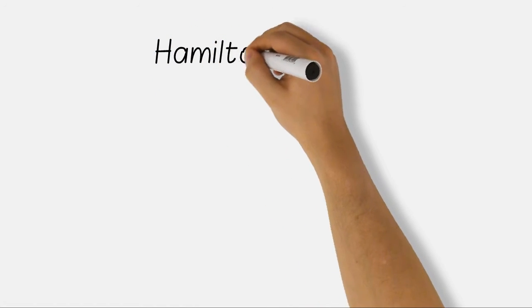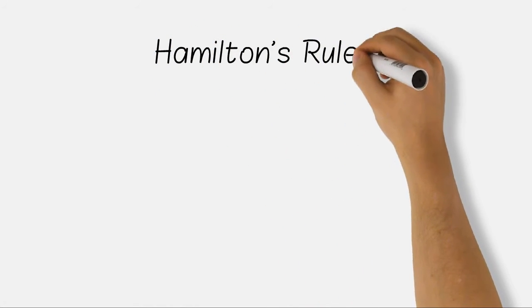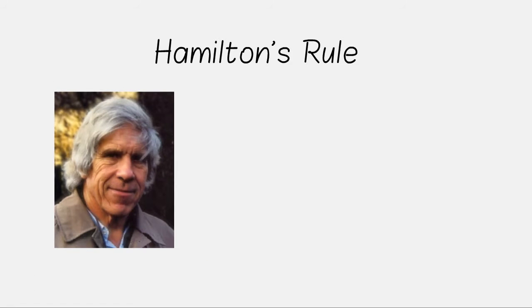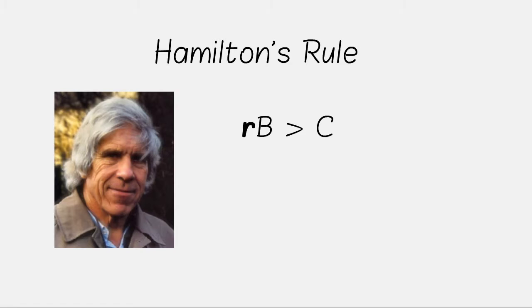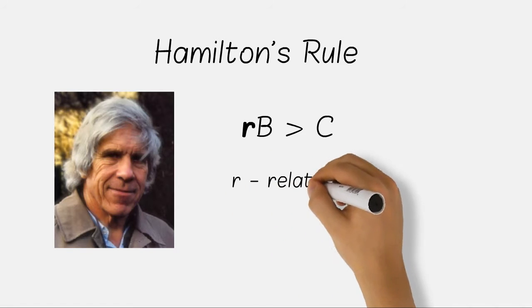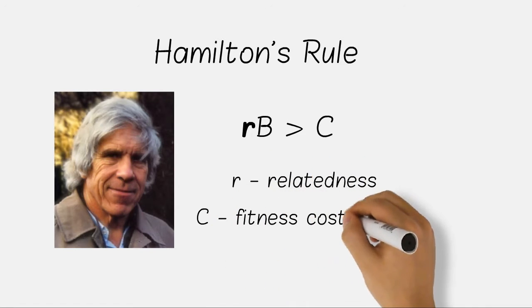But how can altruism evolve when there is such a fitness cost? Well, Hamilton's rule, devised by Bill Hamilton, goes some way towards explaining that. The equation, R times B greater than C, essentially states how altruism can evolve.